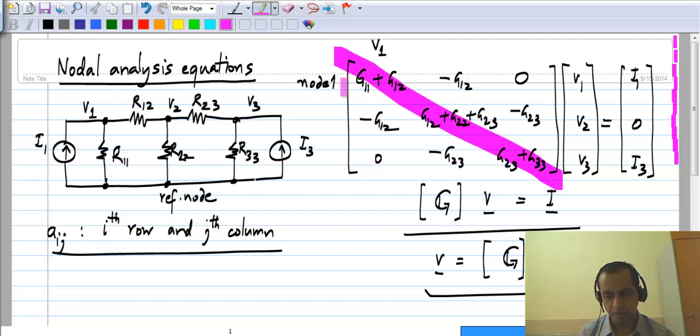The first row corresponds to node 1, and the diagonal element in that element A11 is basically the total conductance connected to node 1. So this is node 1. We have two resistances R11 and R12 connected to it. So the total conductance would be the conductance of this G11 plus the conductance of that G12.